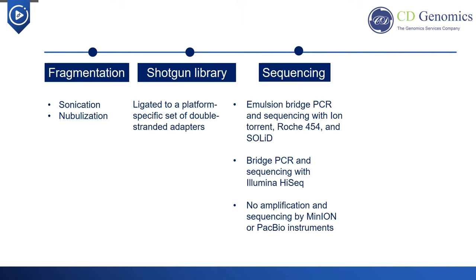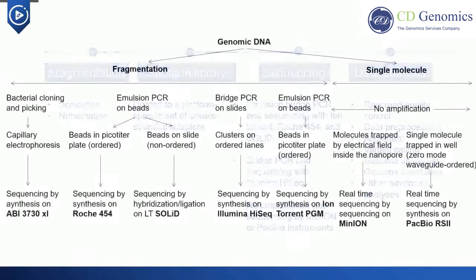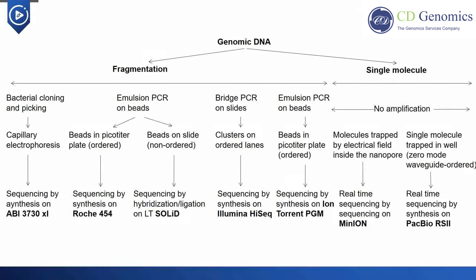All NGS instruments utilize a microfluidic device to contain the amplified fragments of the shotgun library, followed by an imaging step that collects data from fragments being actively sequenced. The data analysis pipeline for WGS includes raw read quality control, data pre-processing, alignment, variant calling, genome assembly, genome annotation, and other advanced analyses. This flowchart illustrates different WGS workflows utilizing different sequencing instruments. NGS instruments require a PCR amplification step before sequencing, while MinION and PacBio instruments rely on single-molecule sequencing technology, which omits the amplification step and can perform direct sequencing.